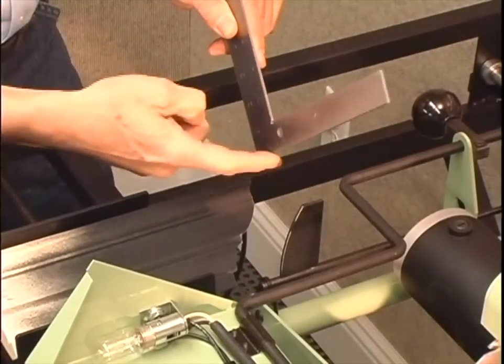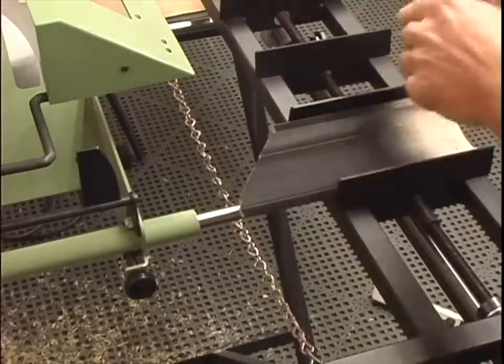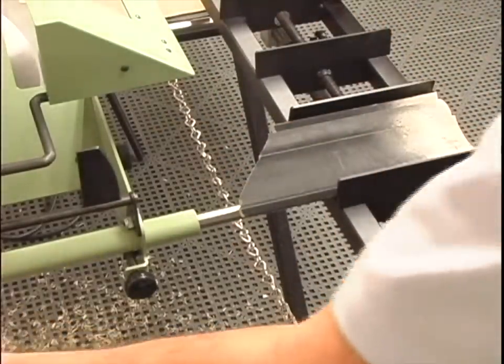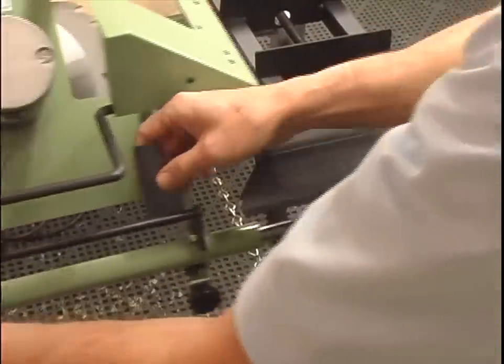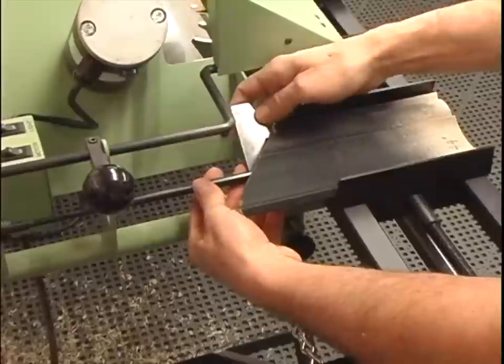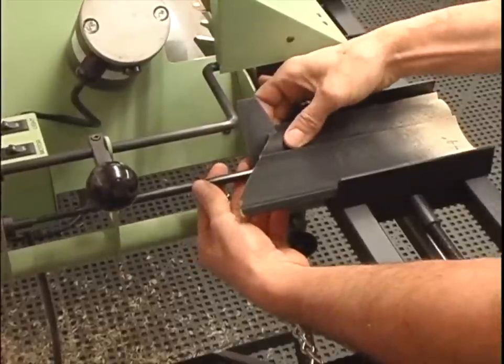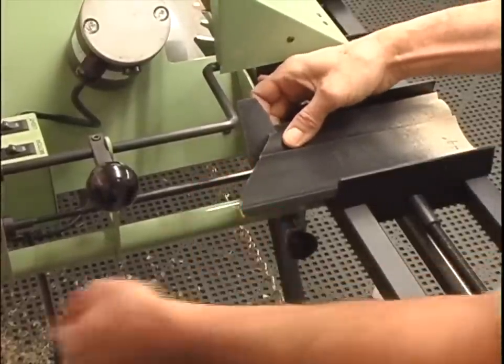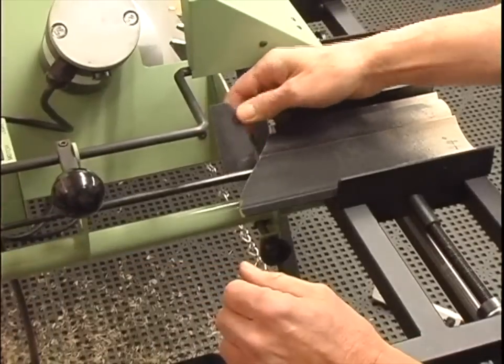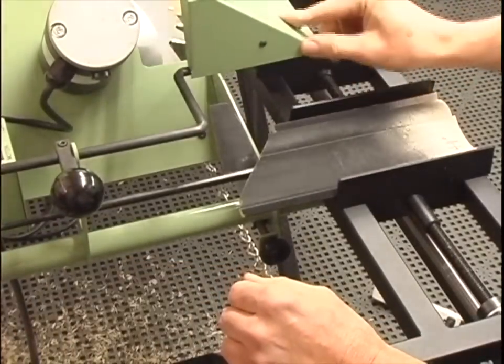For crown, again the stylus has to be positioned at the same angle as the saw blade. Find a flat spot on the molding and use that space to position the stylus angle. Loosen the stylus lock, rock it into position, and lock in place. The stylus is now parallel to the saw blade.